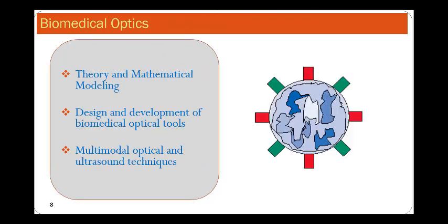The final sub area in biomedical system design will be biomedical optics and ultrasounds. Here we will start with theory and mathematical modeling. For instance, tissue optical properties, basics of infrared spectroscopy, types of near infrared techniques, continuous wave frequency domain and time domain, diffuse optical imaging techniques, etc.